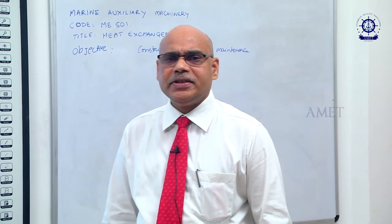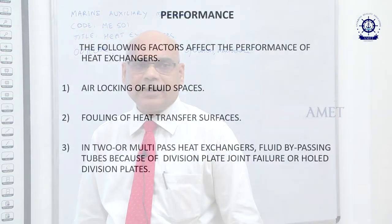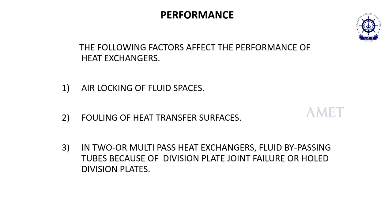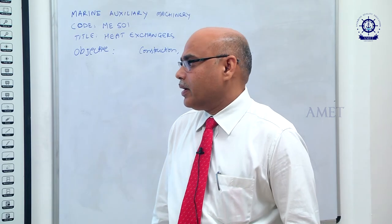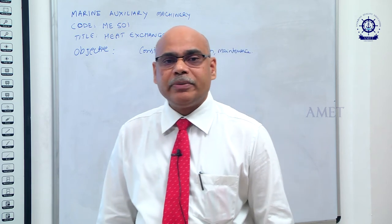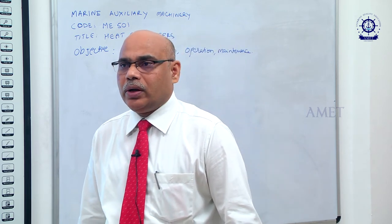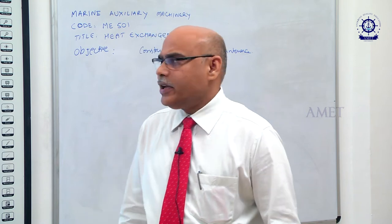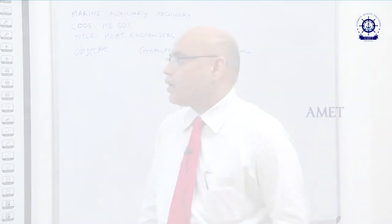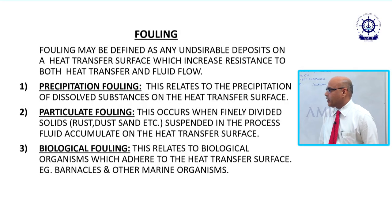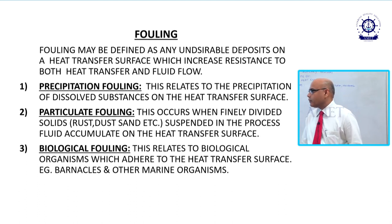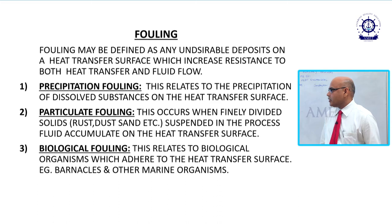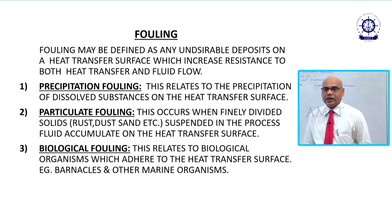The performance of the heat exchanger is affected by various factors: air locking, fouling, and sometimes the division plate gets a hole. In the fouling case we have biological fouling, particulate fouling, and precipitation fouling. The tubes get choked with this fouling, which affects heat transfer.